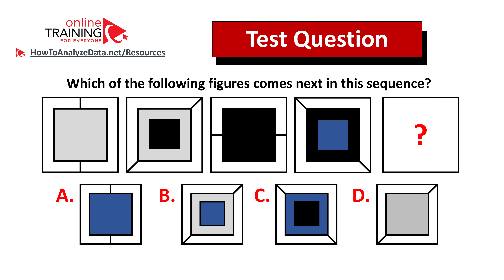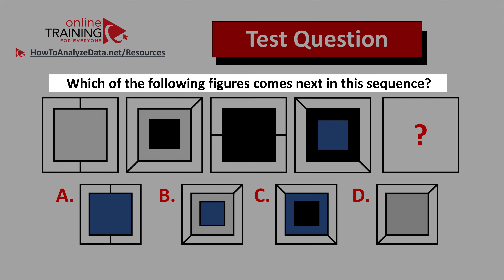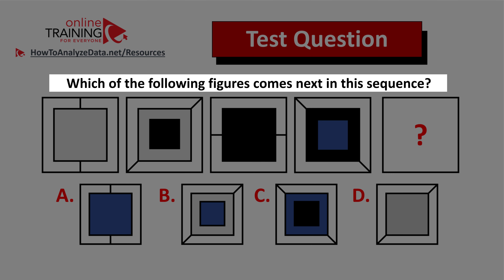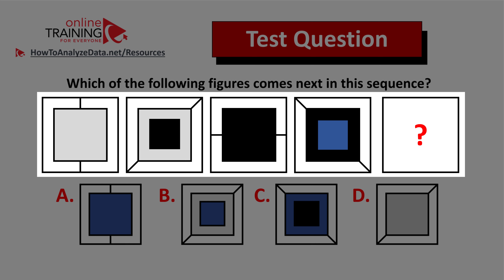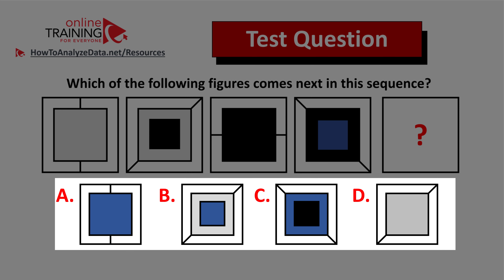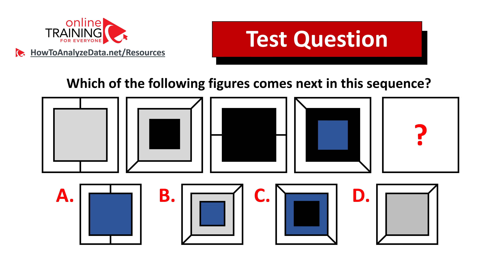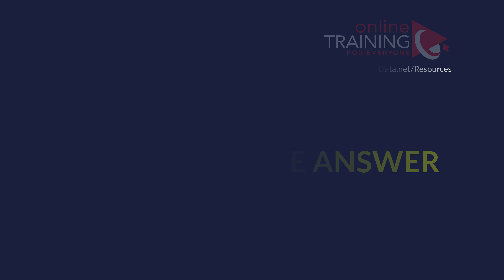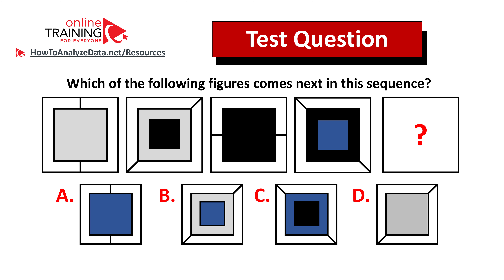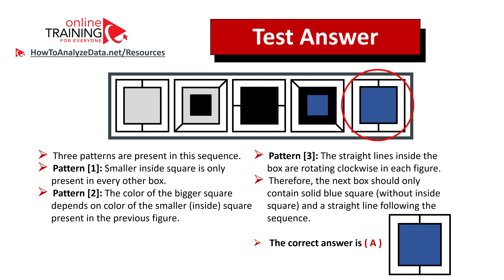Let me share with you a tricky question from the test — I have confidence that you might figure out the answer. Which of the following figures comes next in this sequence? You're presented with a sequence of five figures and figure number five is missing. You have four different choices — A, B, C, and D. Give yourself 10 to 15 seconds to see if you can come up with the solution on your own. To figure out the solution for this particular problem, you need to look for patterns. There are three patterns present in this question.